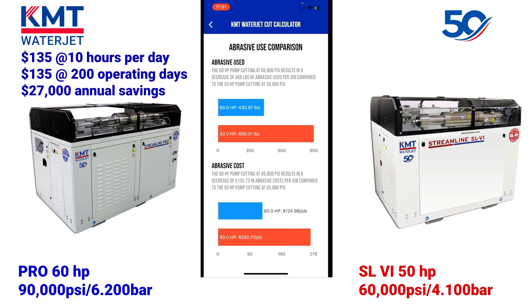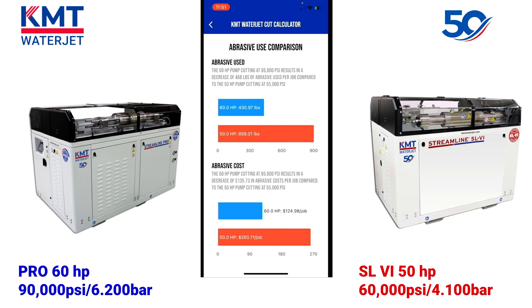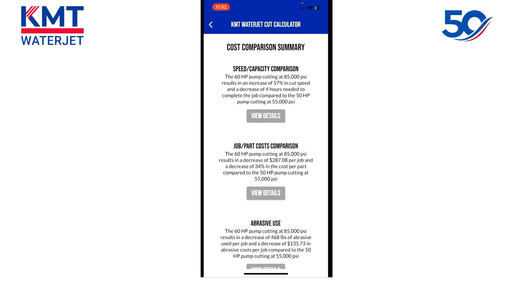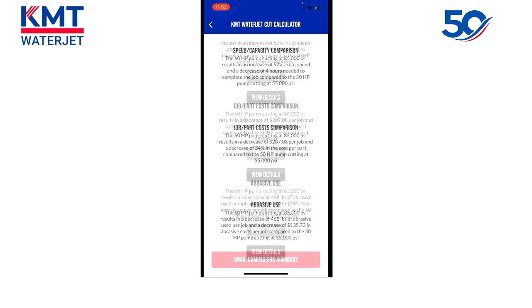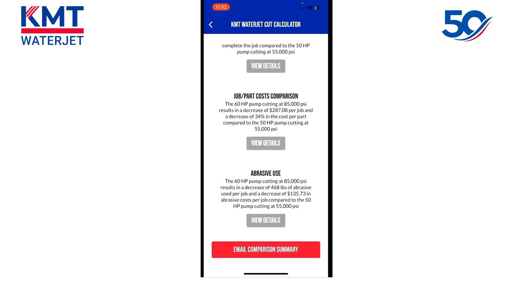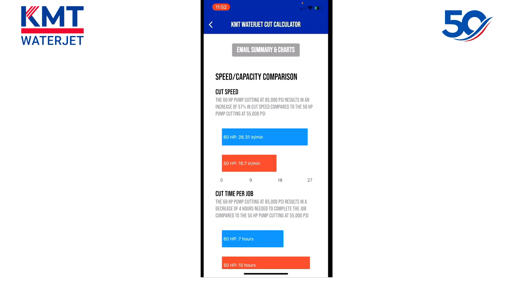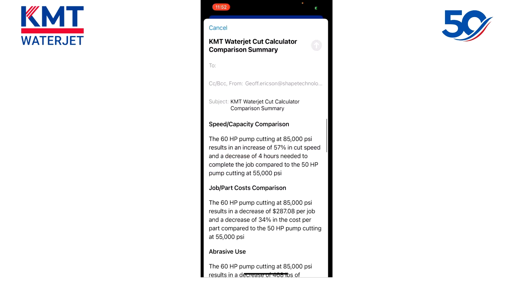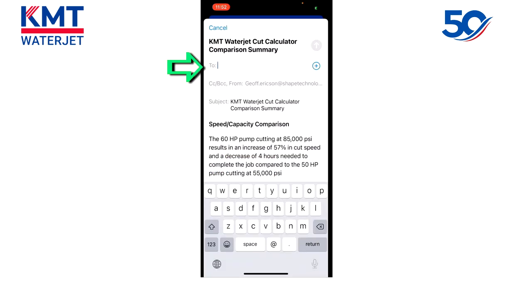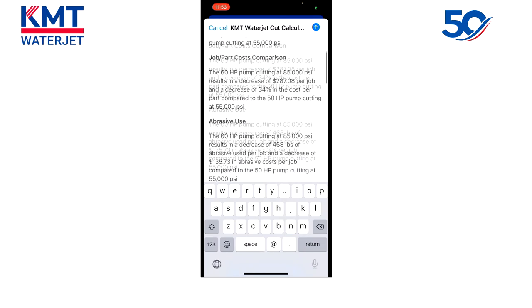This is all really good information, but now we want to put it into the hands of the customer. We can do that by going back to the main comparison summary page and scrolling to the bottom where we'll see email comparison summary. We select email comparison summary, then email summary and charts. We select that button, enter our email address, and now we have the information in an easy-to-use format to send to the customer.